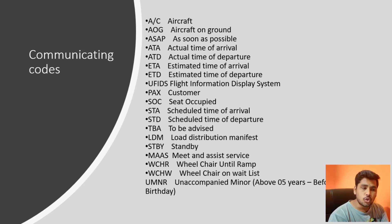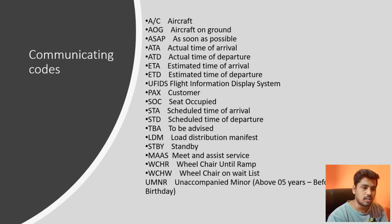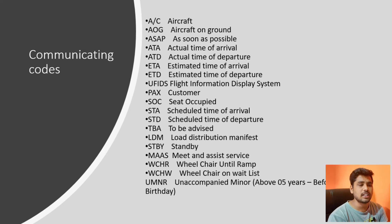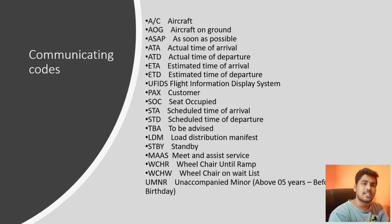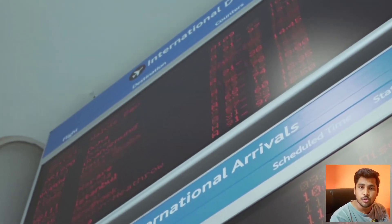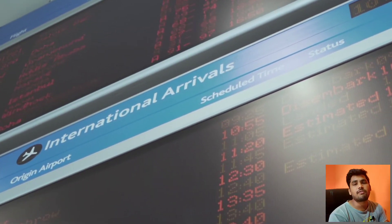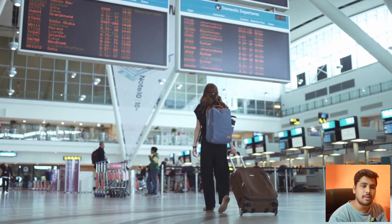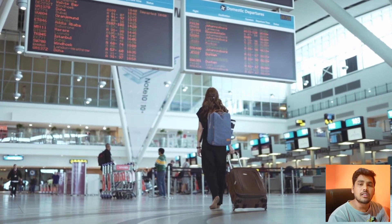Go through these codes once — it's not that difficult. I'll highlight a few that may be new to you. One is FIDS — F-I-D-S. The full form of FIDS is Flight Information Display System. This is the TV screen you see in airports or in the terminal on which flight timings, arrival and departure information are shown. That display system we call FIDS — Flight Information Display System.